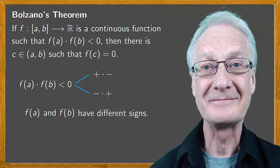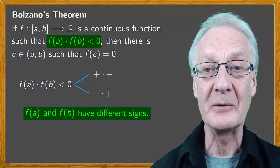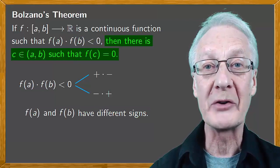Bolzano's theorem states that if we have a continuous function f defined on a closed interval and the signs of the images at the ends of the interval are different, then at some point within the interval the function must take the value zero. In other words, the graph of the function must cross the x-axis.